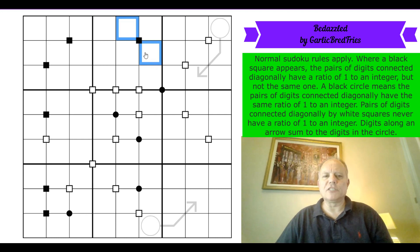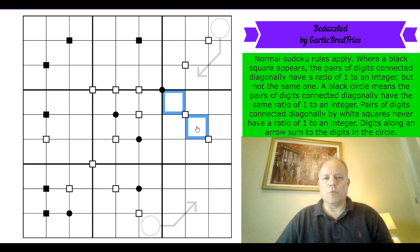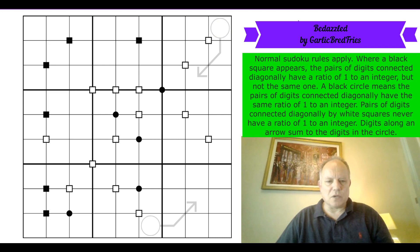For the black circles, there's also a one-to-an-integer relationship, but the ratio is the same for both pairs. The white squares are totally different — there is no one-to-an-integer relationship in either of the pairs. Then we've got a couple of arrows where the numbers along the arrow add up to the number in the circle — normal Sudoku rules.